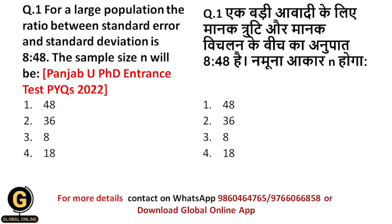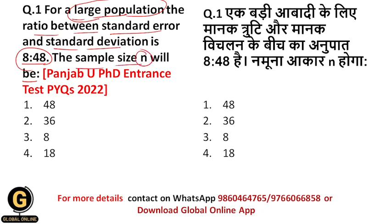Now let us begin. For a large population, the ratio between standard error and the standard deviation is 8 is to 48. The sample size n will be. Here it is given that we have a large population, and the ratio between standard error and standard deviation is 8 is to 48. We need to calculate the sample size, that is n.